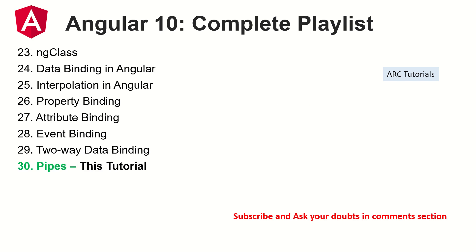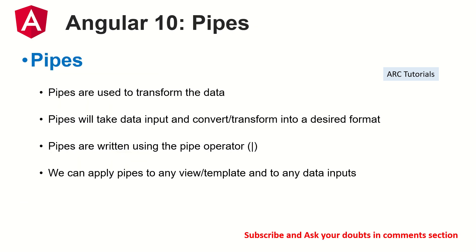Today is the 30th episode and we are learning about pipes in Angular. Pipes are used to transform data — you give an input and you get a desired output in the desired format. Think of it like an analogy: you have an input from one end and output on the other end.